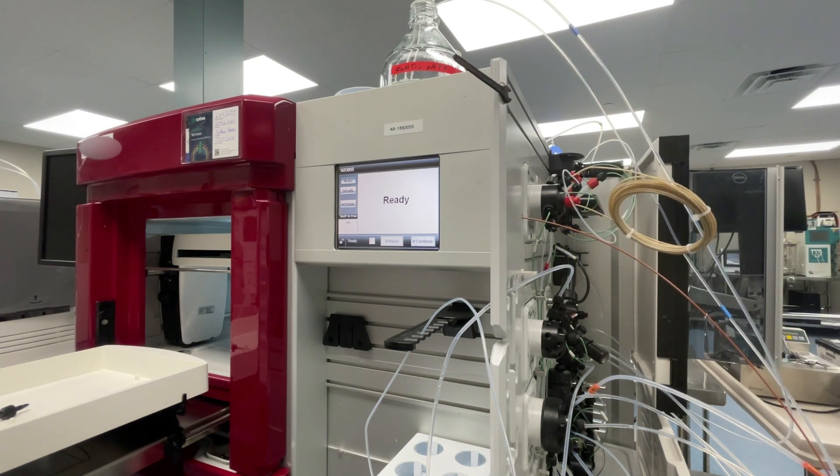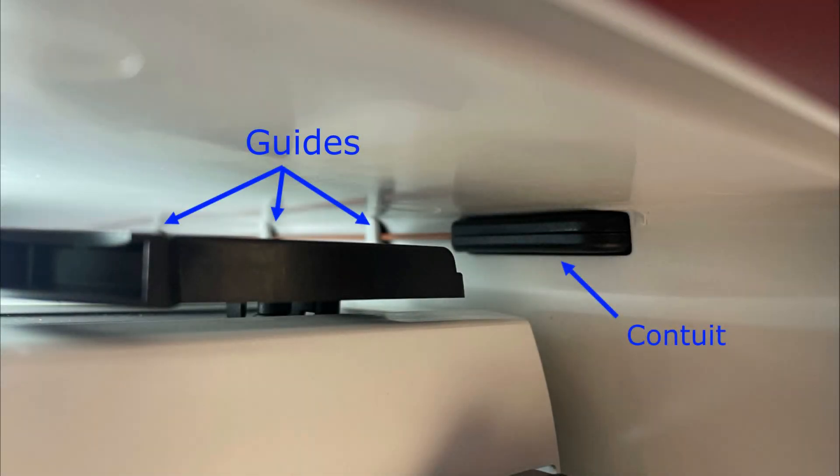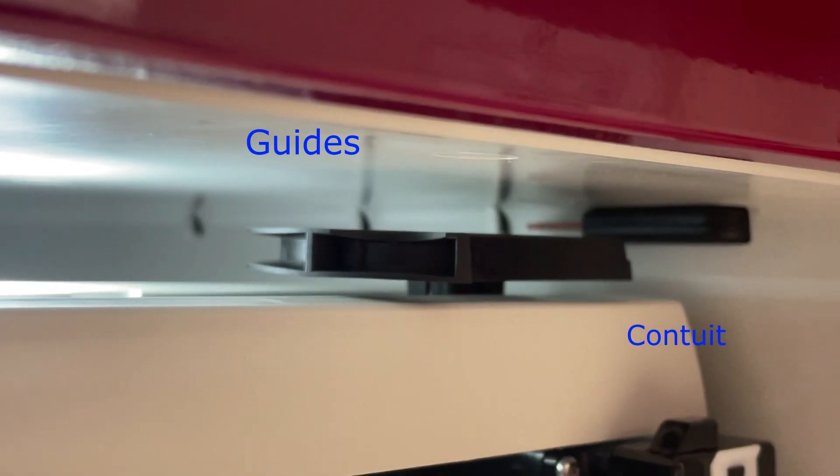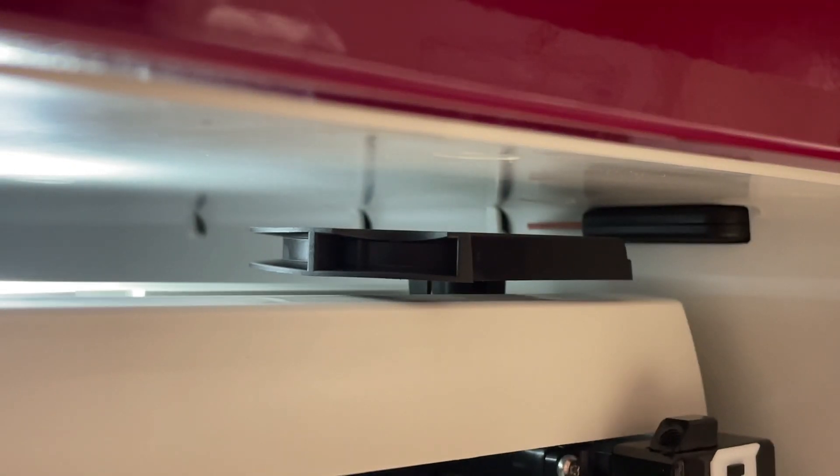If it keeps getting caught on something, you need to clear the 90 degree bend, which is guided by the black conduit shown right here, and then through these guides. The tubing likes to get caught on the edges of the guides.